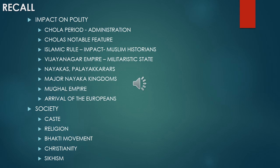We discussed the Vijayanagara Empire. They gave importance to their administration. Vijayanagara was a military state because they often faced threats from nearby Islamic kingdoms — the Deccan Sultanate and the Delhi Sultanate. They appointed Palayakars. The Nayakars introduced the Palayakar system in Tamil Nadu. Their duty was to supply weapons and provide soldiers for the Vijayanagara Empire.